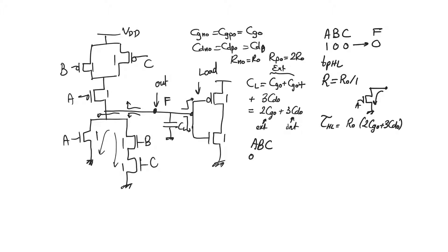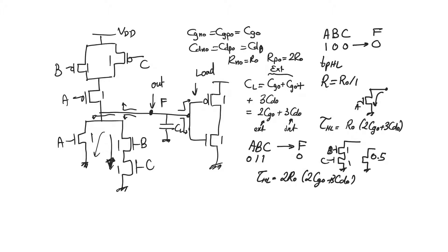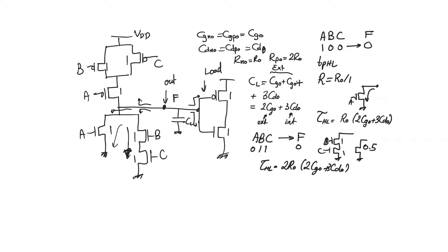For input ABC = 0, 1, 1, F will again settle at 0, but through the path B and C. Each of these transistors is sized at 1, so their equivalent W/L is 0.5, making the resistance R0/0.5 = 2R0. The capacitance is still the same. So the time constant for this input combination is longer, which makes sense: discharging through two series transistors gives higher resistance than through transistor A alone.